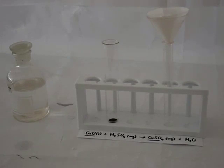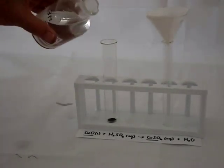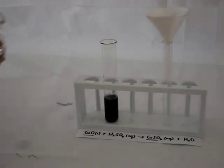Here we have copper oxide, which is a black powder, and we're going to add sulfuric acid. The two react together to form copper sulfate and water.